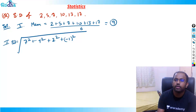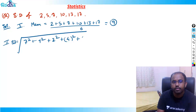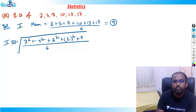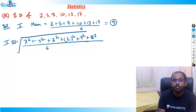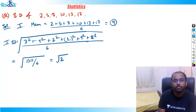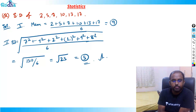The positive differences from 9 are: 7, 4, 2, 1, 4, 8. Squaring and summing: 49 + 16 + 4 + 1 + 16 + 64 = 150. Then 150/6 = 25, so √25 = 5. The standard deviation is 5.